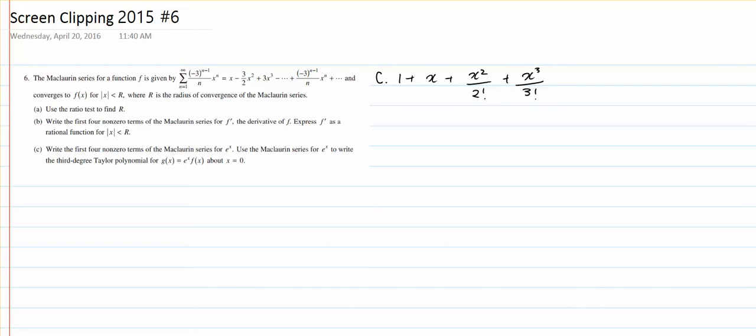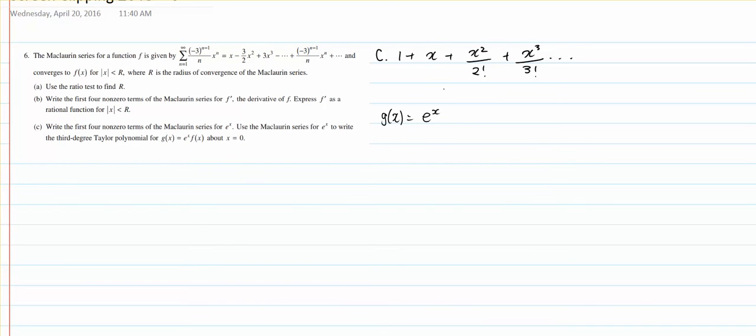So that's e to the x. So, e to the x times f of x, which is g of x, would be e to the x, which is 1 plus x plus x squared over 2 factorial plus x cubed over 3 factorial dot dot dot dot times f of x, which is x minus 3x squared plus 3 x cubed minus dot dot dot dot.